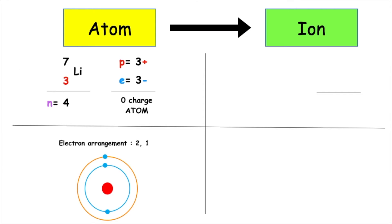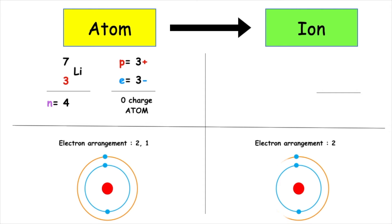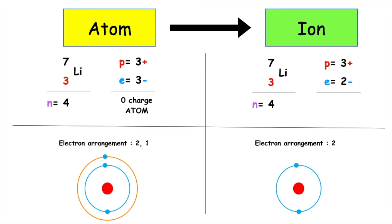The lithium atom has the electron arrangement 2-1. It has three protons and three electrons, so it has zero charge. However, all elements want to achieve stability by having a full, stable outer electron shell. The lithium atom will want to lose one electron, which means it's got more protons than electrons. The overall charge of this ion is +1.